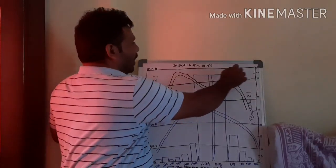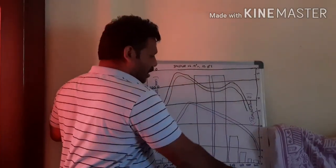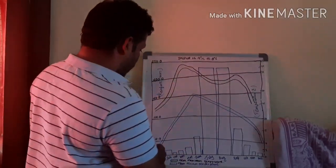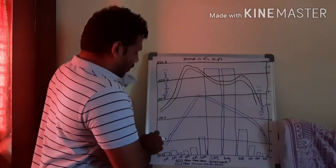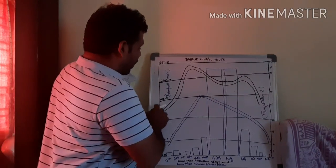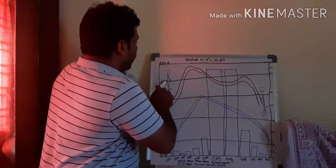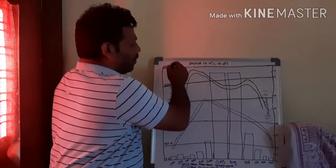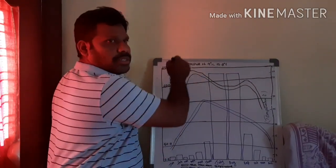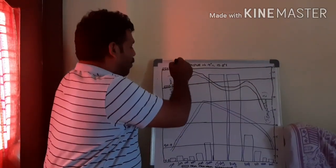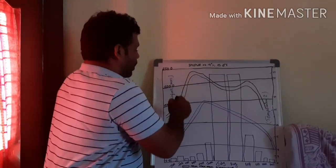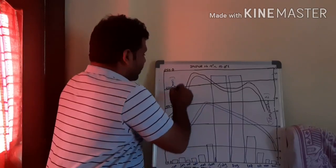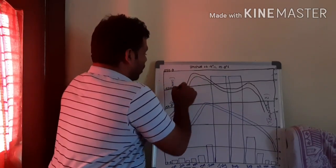If you observe the graph picture very clearly, on the left side we can find values 0, 50, 100, 150, 200, 250. These are in millimetres, and the left side of the graph represents rainfall.